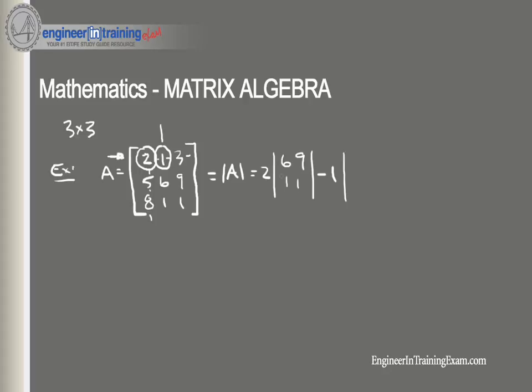And then finally we take 3 as our scalar, and we ignore once again the row and the column numbers that that scalar is in, and that leaves us with the matrix 5, 6, 8, 1.